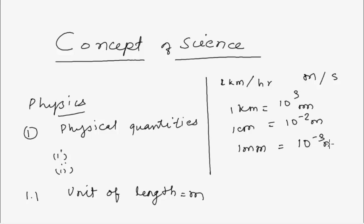1 cm equals 10 to the power minus 2 meter. 1 mm (millimeter) equals 10 to the power minus 3 meter. These are the relevant conversions.